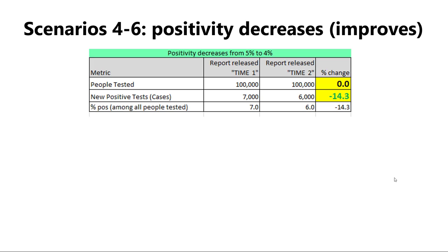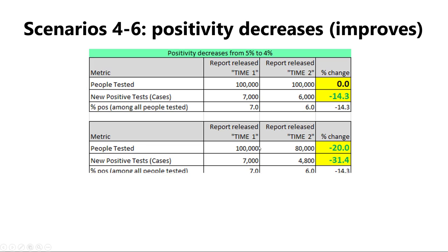What about when we see decreases in positivity — that's an improvement. For scenarios four through six, we're going from 7% positivity to 6%. When testing volume remains the same, we'll actually see a reduction in cases. If you ask: was this 14% reduction in cases just because we were testing less? No — it's because a smaller proportion of people tested are testing positive. If testing actually decreased from 100,000 to 80,000 per day, we'll see decreases in both volume and cases, but the decrease in cases will be more pronounced. Just the decrease in testing volume will not be able to explain the decreases in cases.